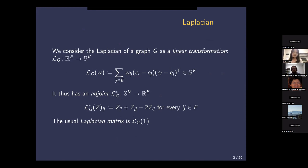Most of you are already familiar with the Laplacian. I just want to make one small remark about it. We can consider the Laplacian of a graph G as a linear transformation — a linear transformation taking vectors indexed on the edges into symmetric matrices. The Laplacian with weights W is just the summation over every edge of W_ij times this quadratic form. This is what most of you know as the weighted Laplacian. The important point is that if you think of the Laplacian as a function on the weights, that's a linear transformation.